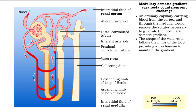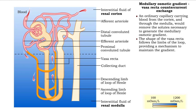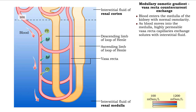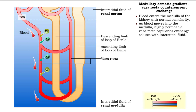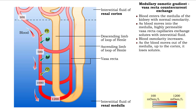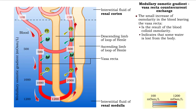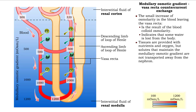However, the shape of the vasa recta follows the limbs of the loop, providing a mechanism to maintain the gradient. The blood enters the medulla of the kidney with normal osmolarity. As the blood moves into the medulla, the highly permeable vasa recta capillaries exchange solutes with the interstitial fluid, and blood osmolarity increases. As the blood moves out of the medulla, up to the cortex, it loses solutes. Blood osmolarity decreases nearly to the normal value. A small increase of osmolarity in the blood leaving the vasa recta is due to the blood colloid osmolarity and indicates that some water is nevertheless lost from the body. In this way, tissues are provided with nutrients and oxygen, but solutes that maintain the medullary osmotic gradient are not transported away from the nephron.